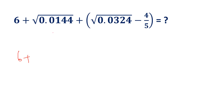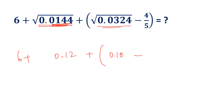Next question: Simplification involving decimals. 6 plus 0.0144 — decimal point, 0.8%. Square root of 144 is 12. The decimal point here is 2, so root gives 1.2. Then bracket minus 4 by 5, 0.8 — simplifying gives 0.80. Subtract to get 0.62.